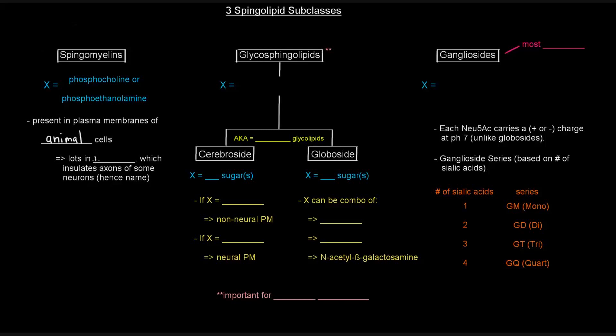And there's lots of them in myelin. Myelin, you might know, or you might not know, is what helps insulate axons of certain neurons. And so, because sphingomyelins are especially prevalent in there, they're actually given the name sphingomyelins because of that. Because of their prevalence in the myelin sheath.